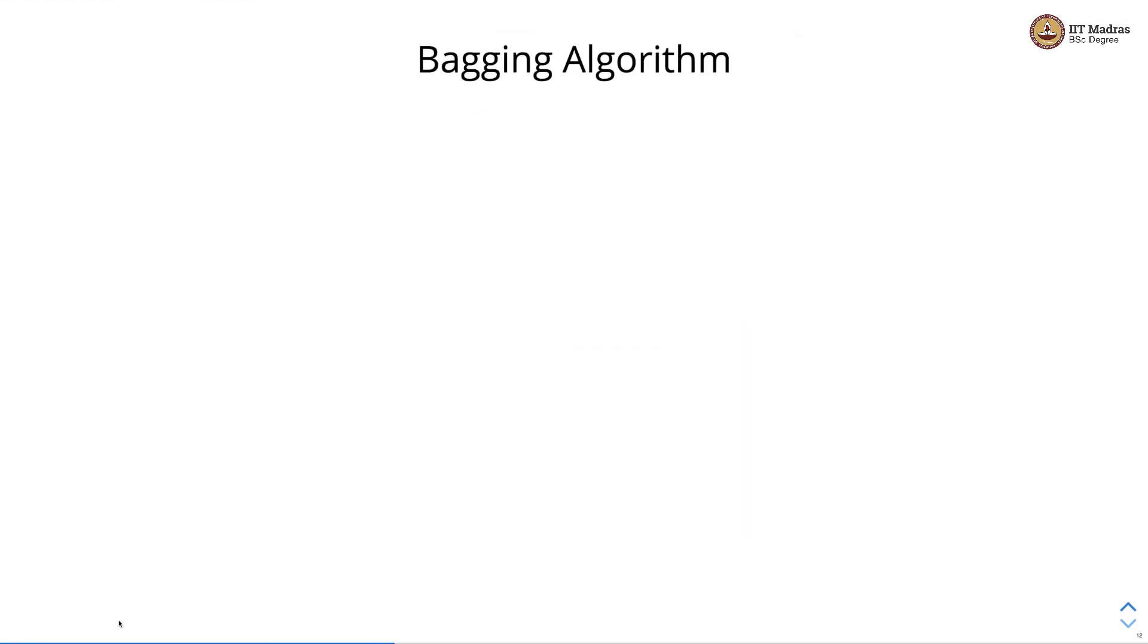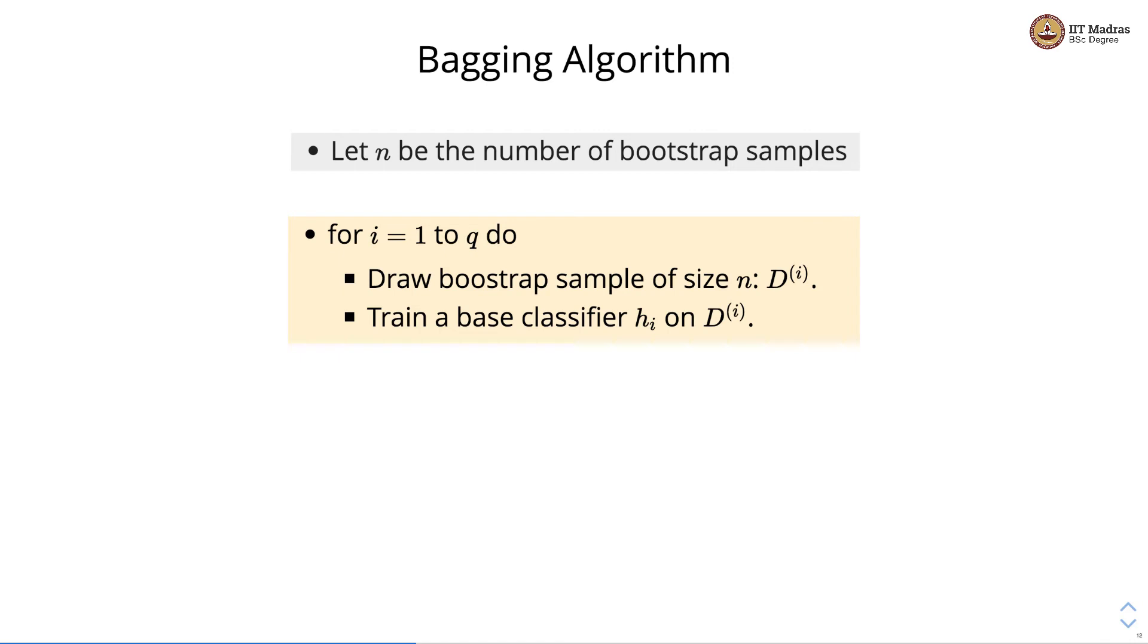Let's study general bagging algorithm. Let n be the number of bootstrap samples. For i equal to 1 to q, q is the number of estimators. We first draw bootstrap sample of size n and call it as di. Then we train a base classifier hi on di.